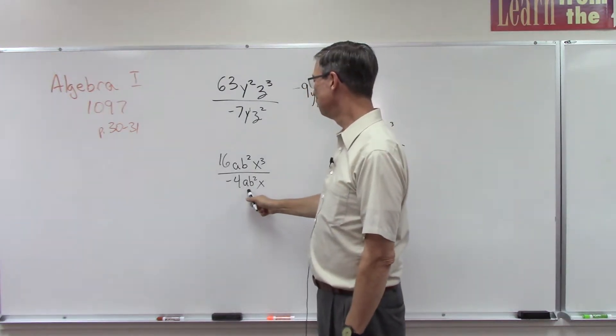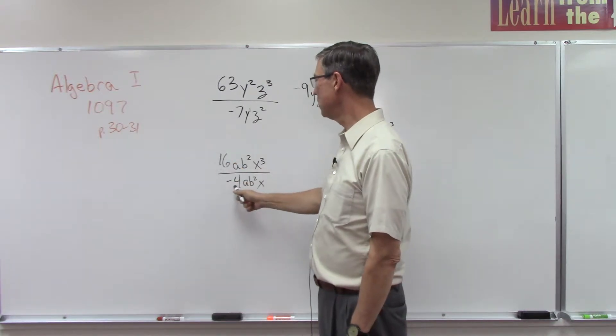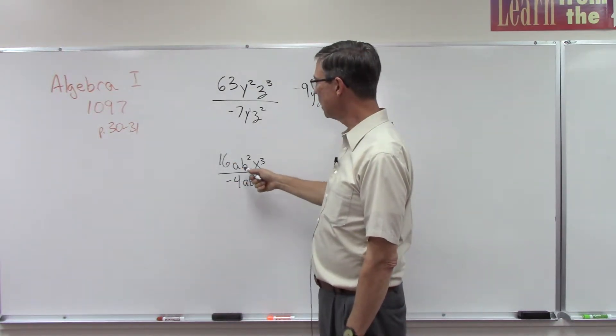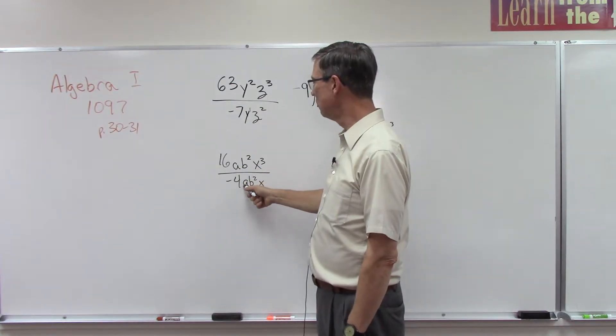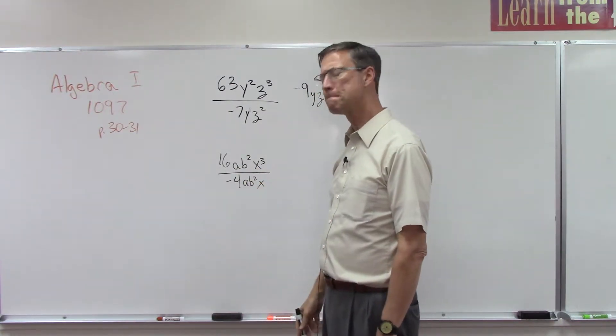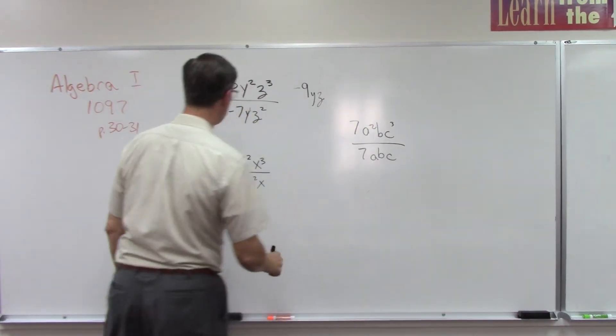Let's do this one. 16 divided by -4. I'll let you write that answer down. Now let's think about this: a divided by a. I'm going to do this off to the side here because I want to illustrate this.